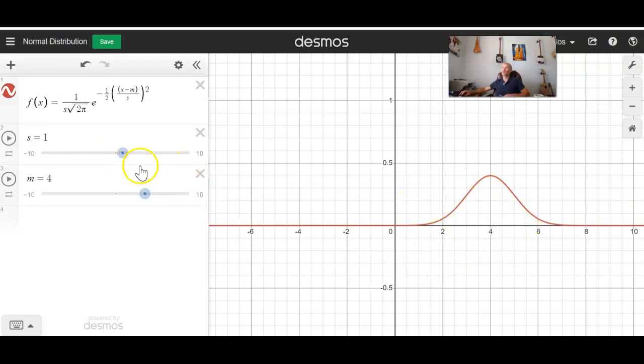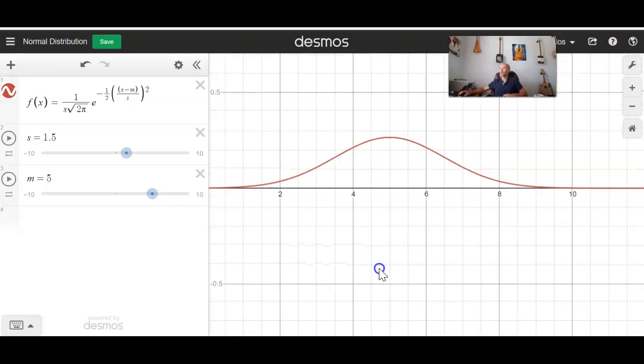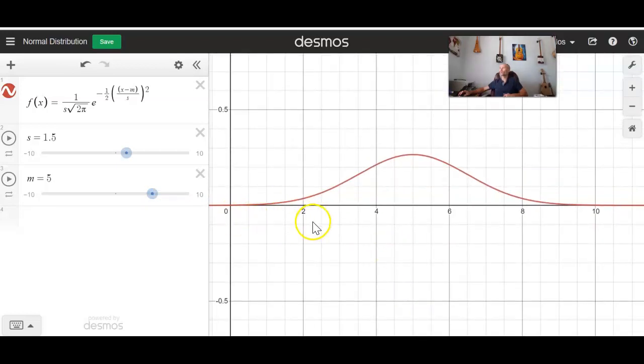And now let's watch what happens when we change S. So S is the standard deviation. If we make it bigger, notice its center is still at 4, but it becomes more spread out. So if we had some measurement, maybe we were measuring people's preference on some sort of scale from 1 being the lowest, 10 being the highest.